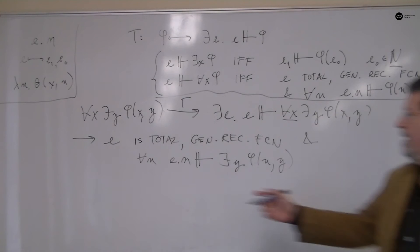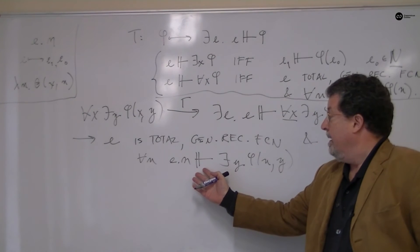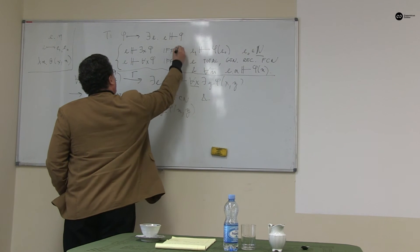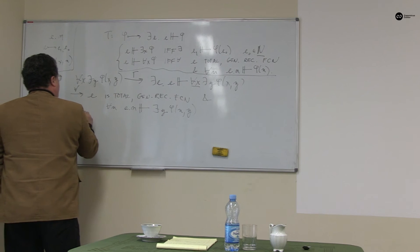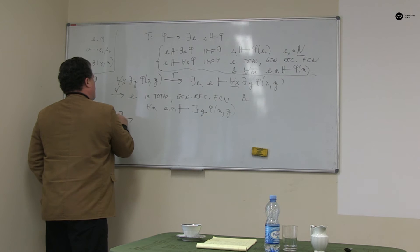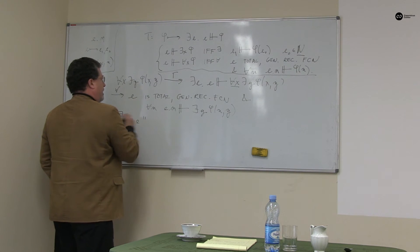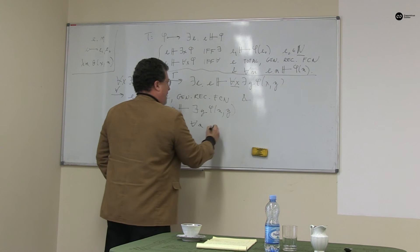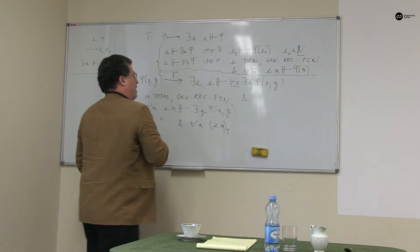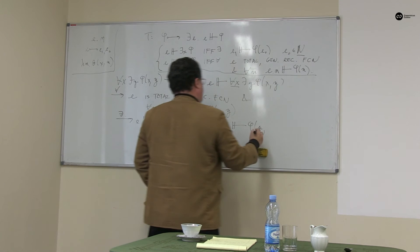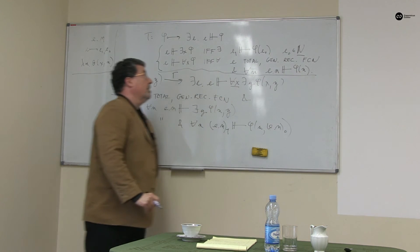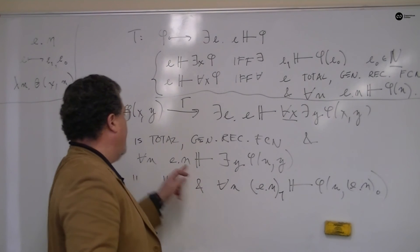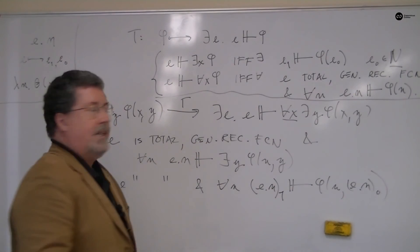And I continue to reduce. I now have a complicated term standing in the constructs relation to a parametrized existential statement. And so if we call this one the for all clause and this one the existence clause, this holds by for all. And then by the existence clause, we're going to get e is total, it's general recursive, and for all n. Now I apply the unpairing operation en1, written like that, constructs phi n en0. So I've just applied the existential clause here into the parametrized statement. And I know that the second component of this constructs the formula instantiated on the first component.